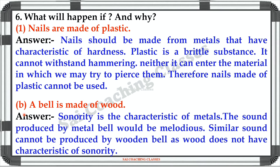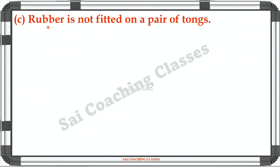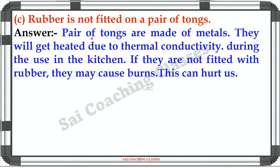D: A bell is made of wood. Answer: Sonority is the characteristic of metals. The sound produced by a metal bell would be melodious. Similar sound cannot be produced by a wooden bell as wood does not have the characteristic of sonority. C: Rubber is not fitted on a pair of tongs. Answer: Pairs of tongs are made up of metals. They will get heated due to thermal conductivity during use in the kitchen. If they are not fitted with rubber, they may cause burns. This can hurt us.